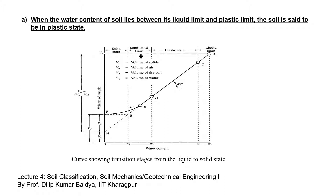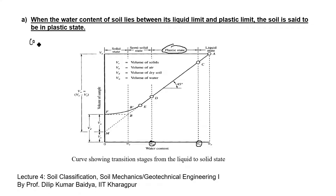In this statement, it is written that when the water content of soil lies between its liquid limit and plastic limit, the soil is said to be in plastic state. Yes, this statement is correct — when the water content of soil lies between the plastic limit and liquid limit, the soil is in plastic state. So option A is correct.